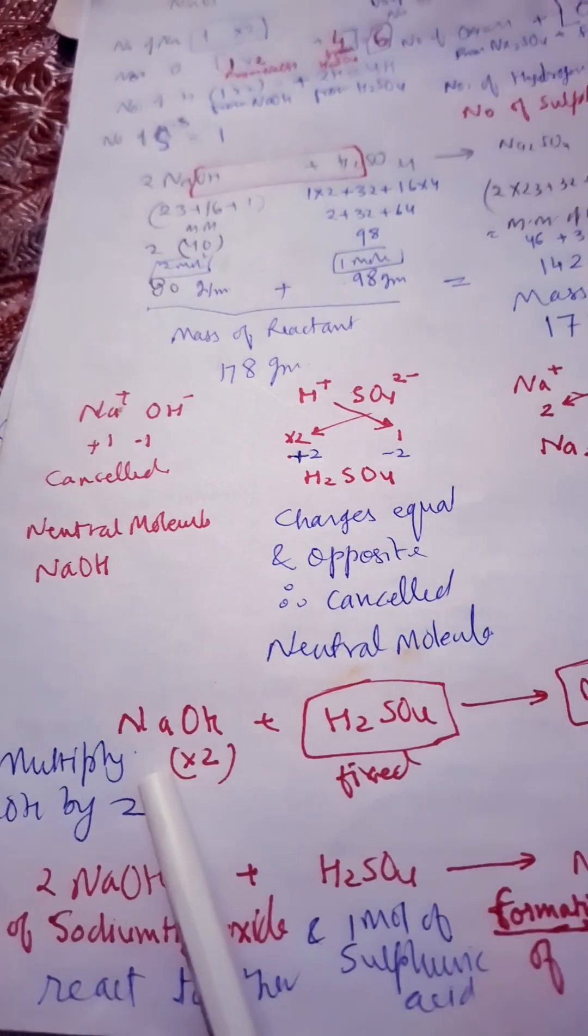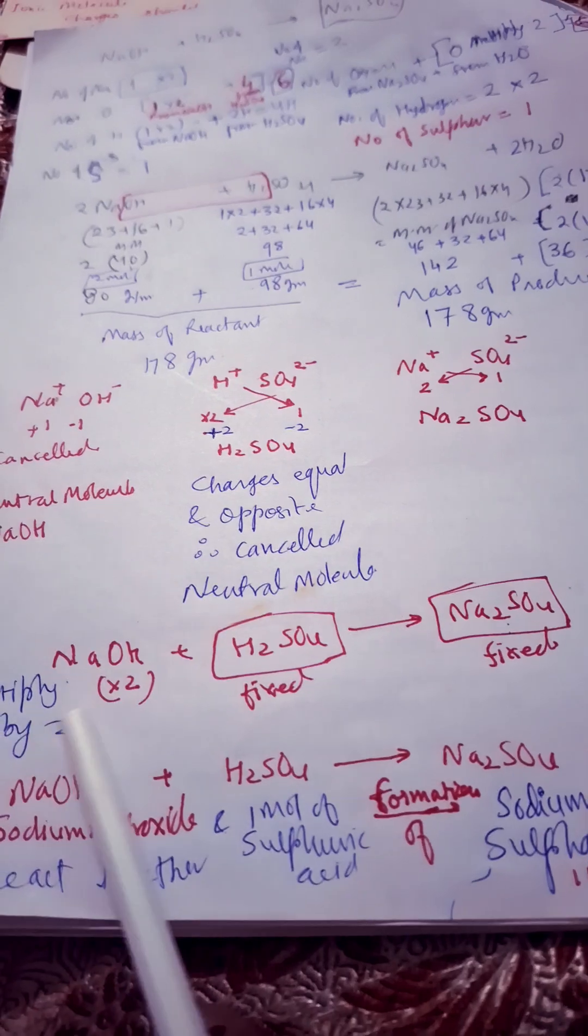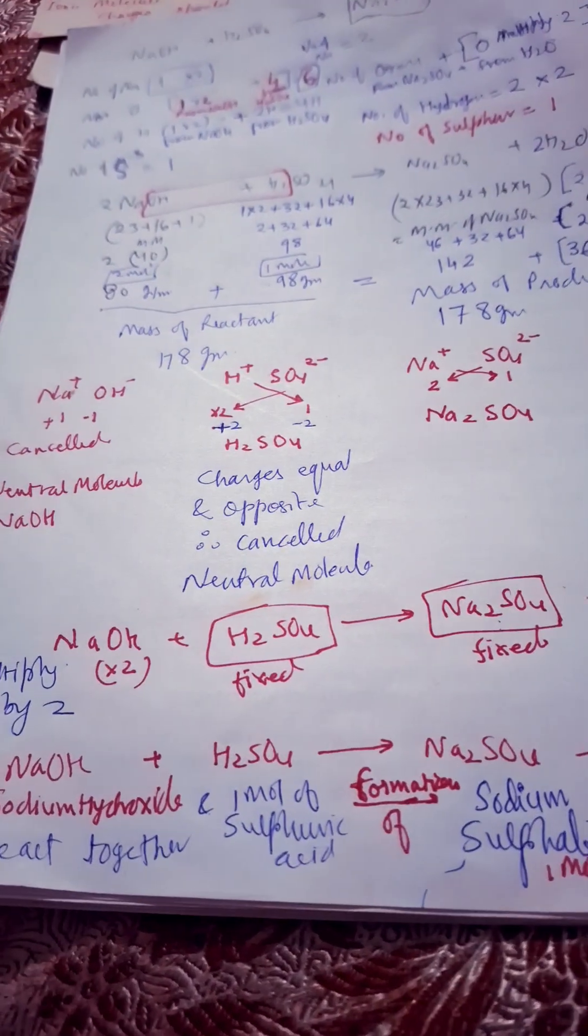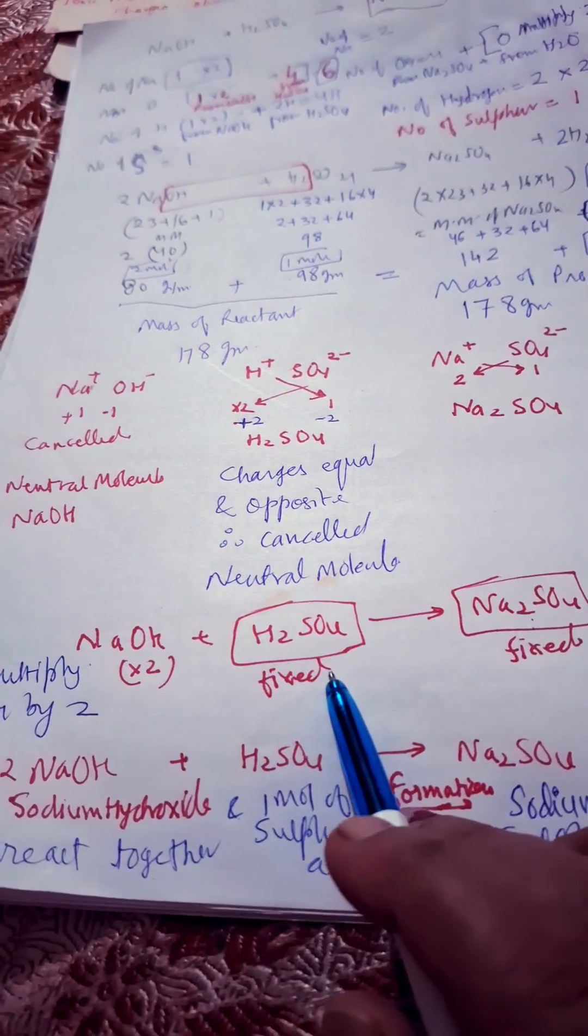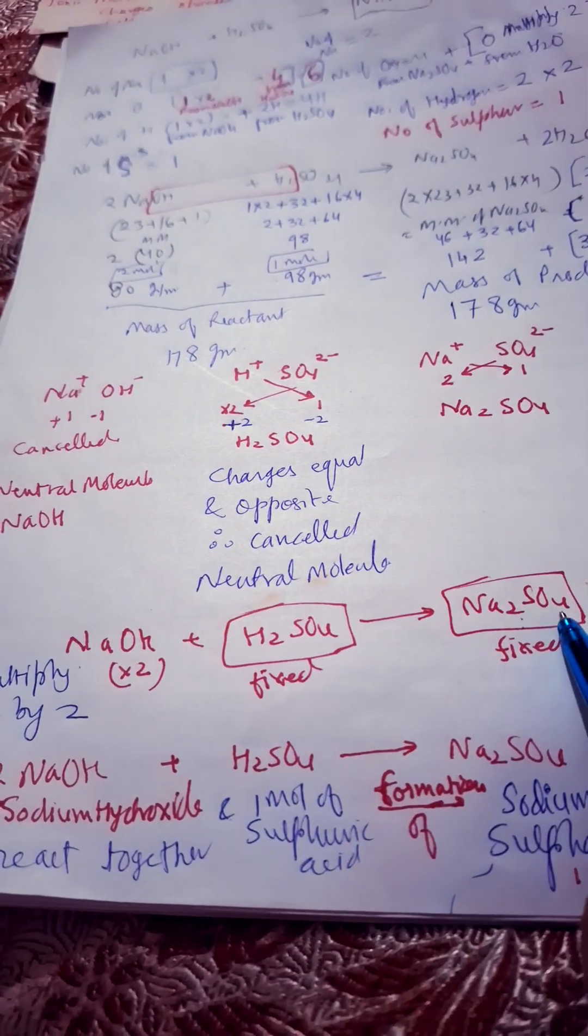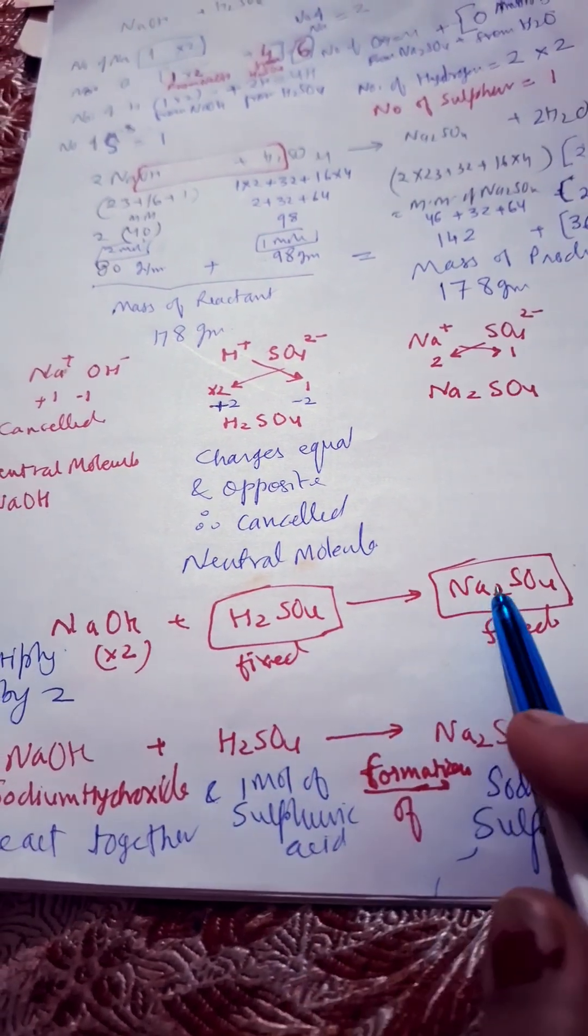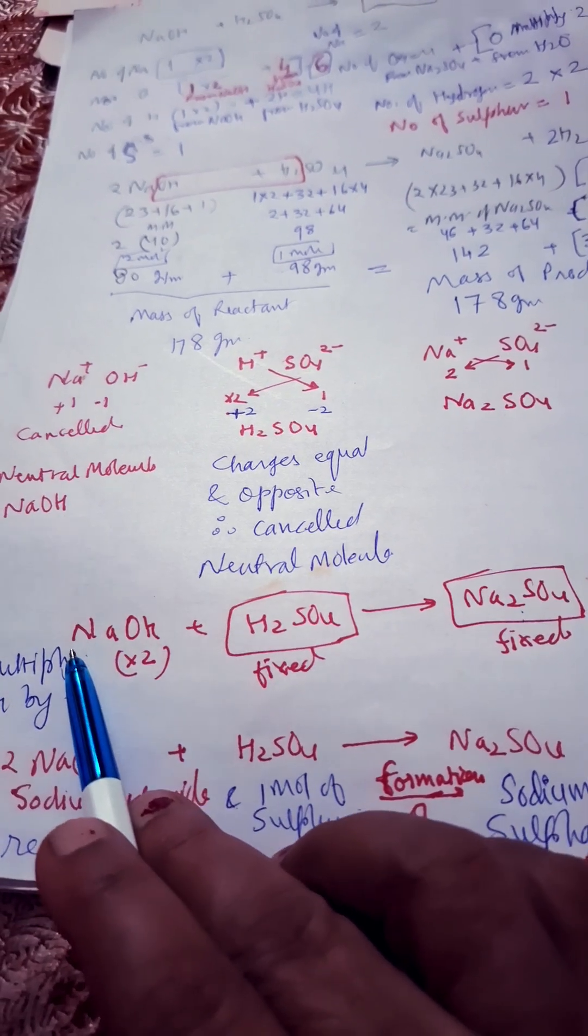So first I will do this: NaOH plus H2SO4 gives you Na2SO4 plus water. What I did, I put this Na2SO4 in a box and H2SO4 in a box. Here SO4, here SO4, here Na2. Okay, here H2. So what we have to do, we are watching here Na is two times, so if we multiply this NaOH by two.